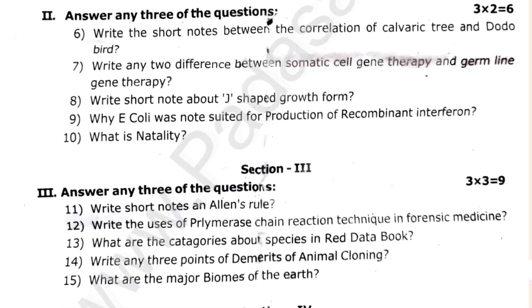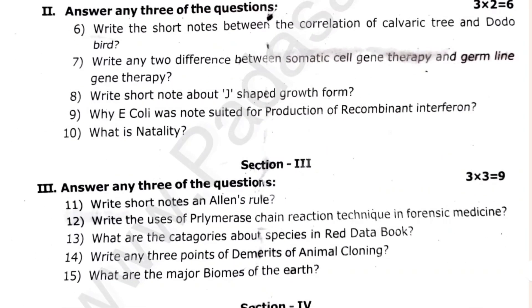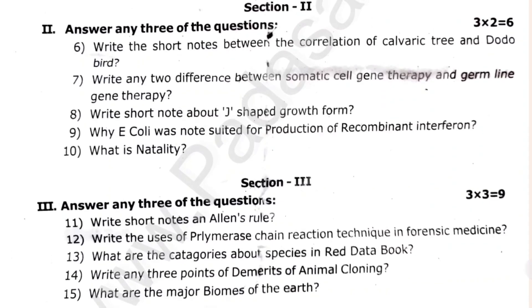2-mark, 3-mark, 2-mark, 3-mark. Let's see. What is natality? Why equally was not suited for production of recombinant interferon?